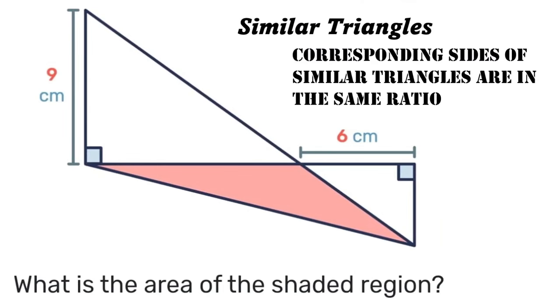Well, corresponding sides of similar triangles are in the same ratio. So if we label the height of the smaller triangle h and the base of the larger white triangle x, then that means that the ratio of the base of the large triangle to the base of the small triangle...